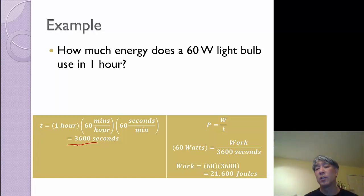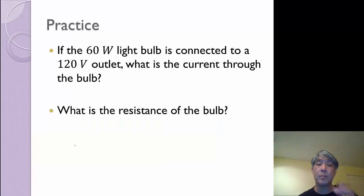Something you can do is do a calculation and say, well, how much does that 21,600 joules actually cost my family to run that light bulb for an hour? And if you go and pull up your electric bill, you'll find it costs you a few cents to run that light bulb for an hour. What is the current through the bulb and what is the resistance of the bulb? So do those calculations using the formulas and we'll talk about that next class. Thank you.